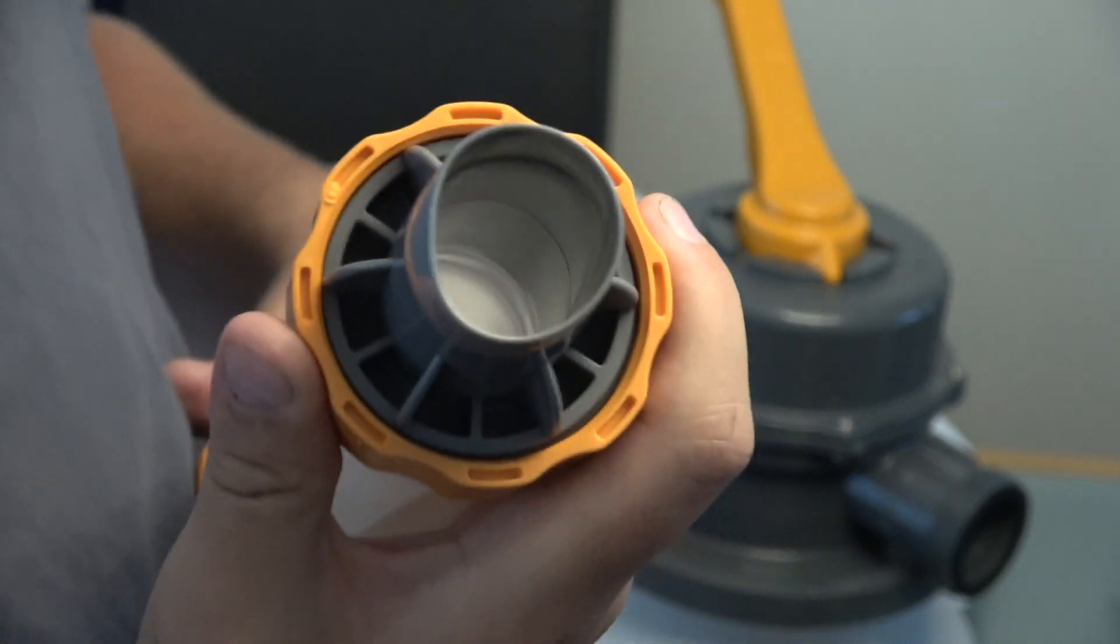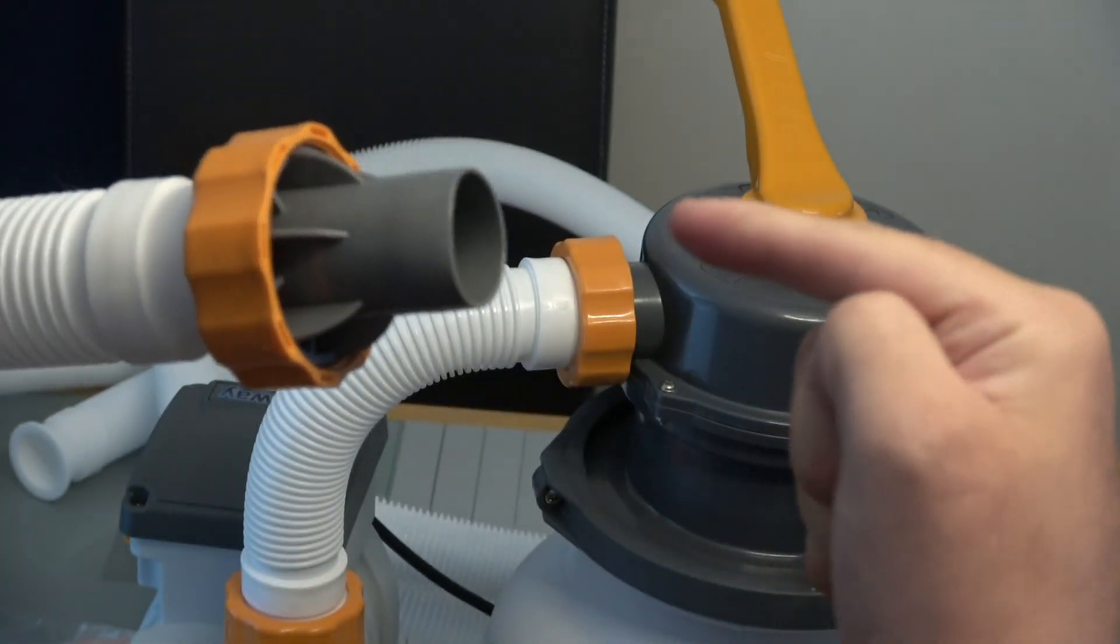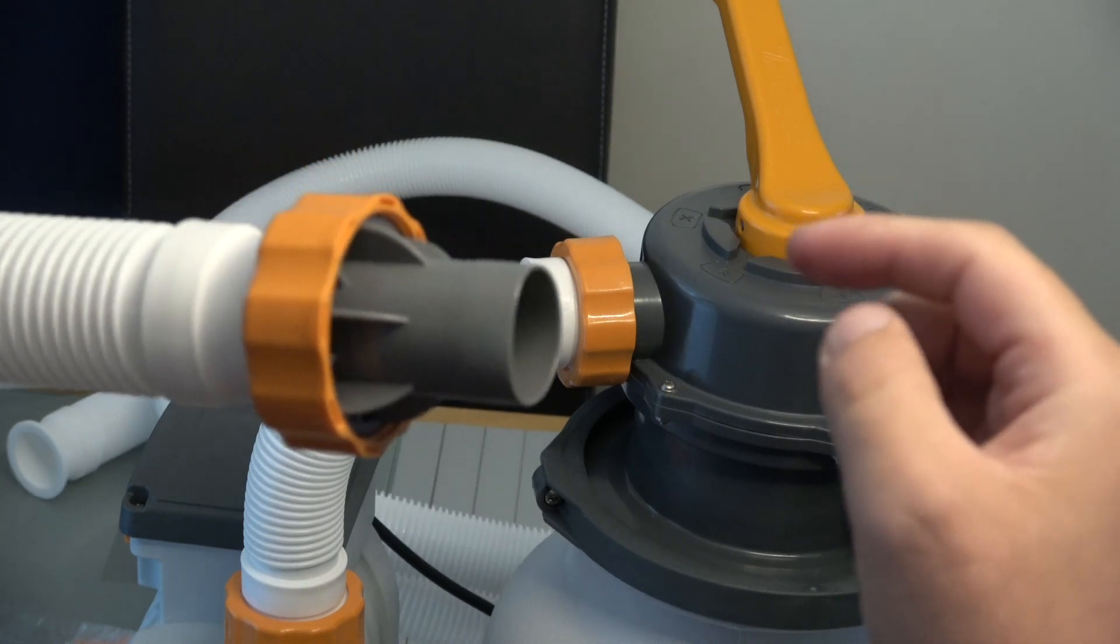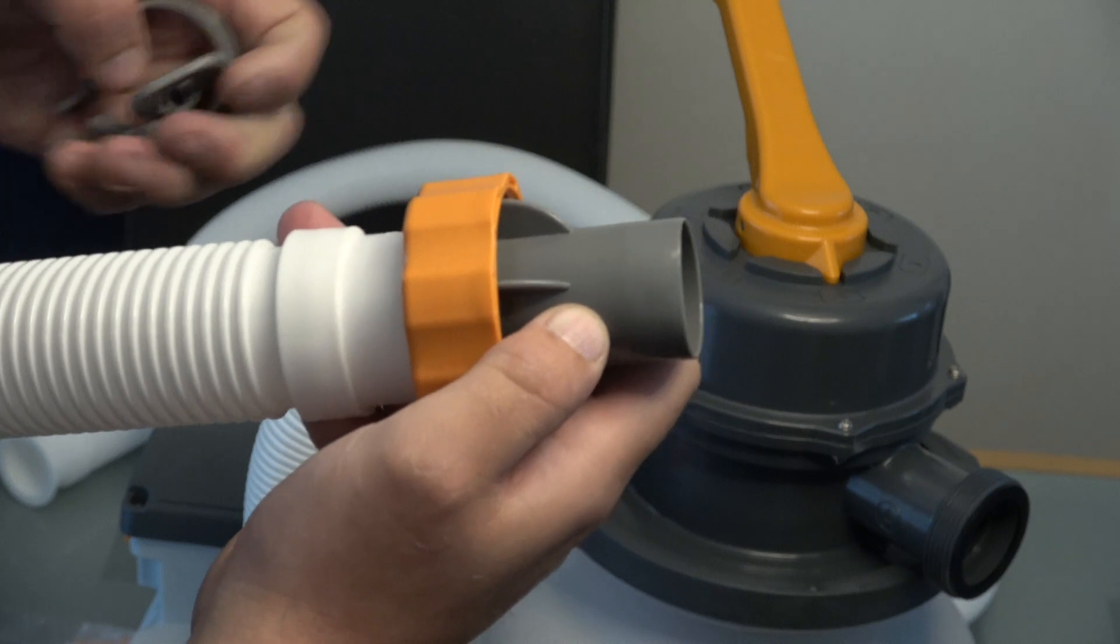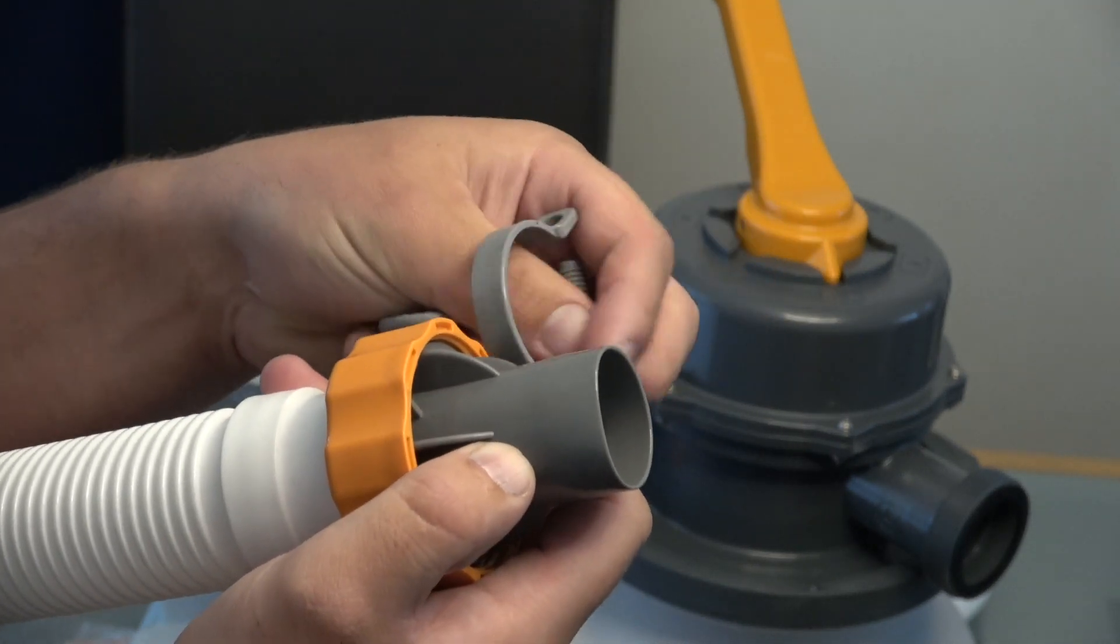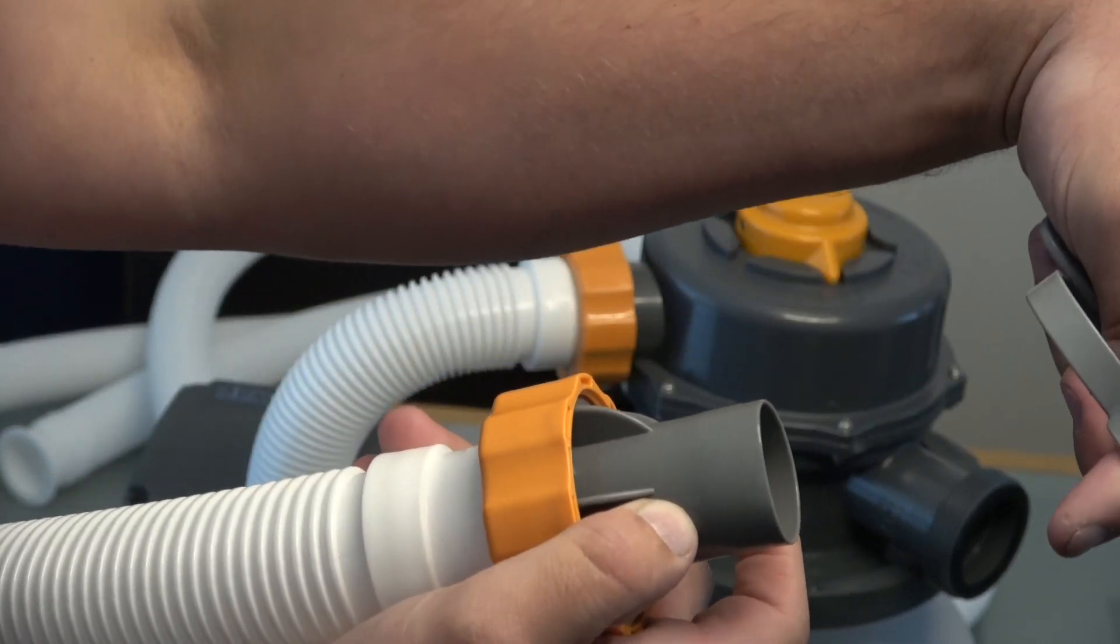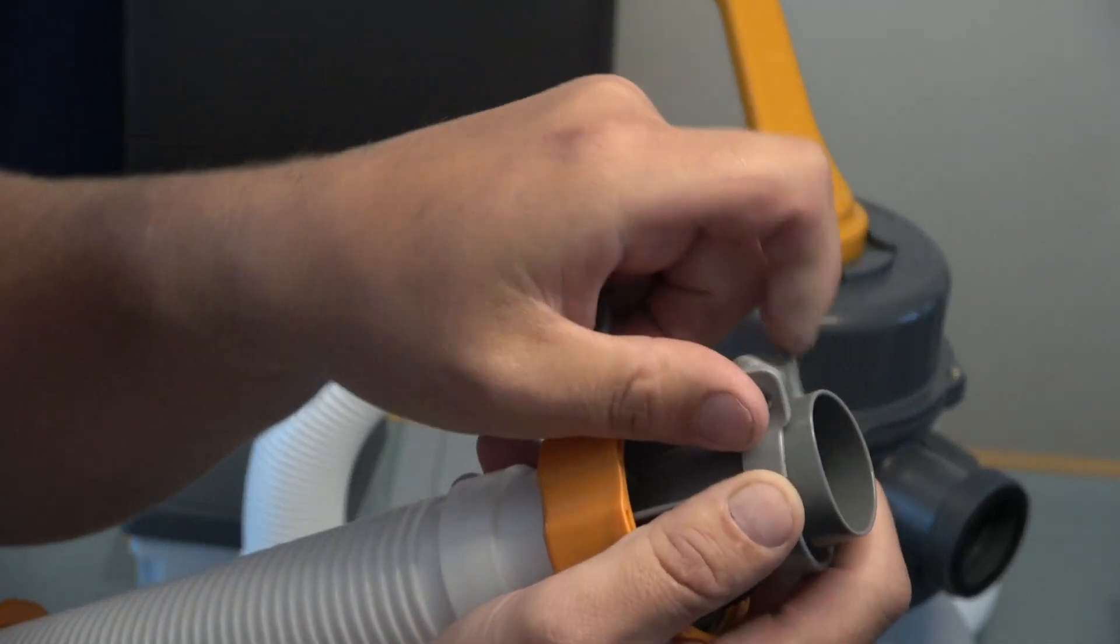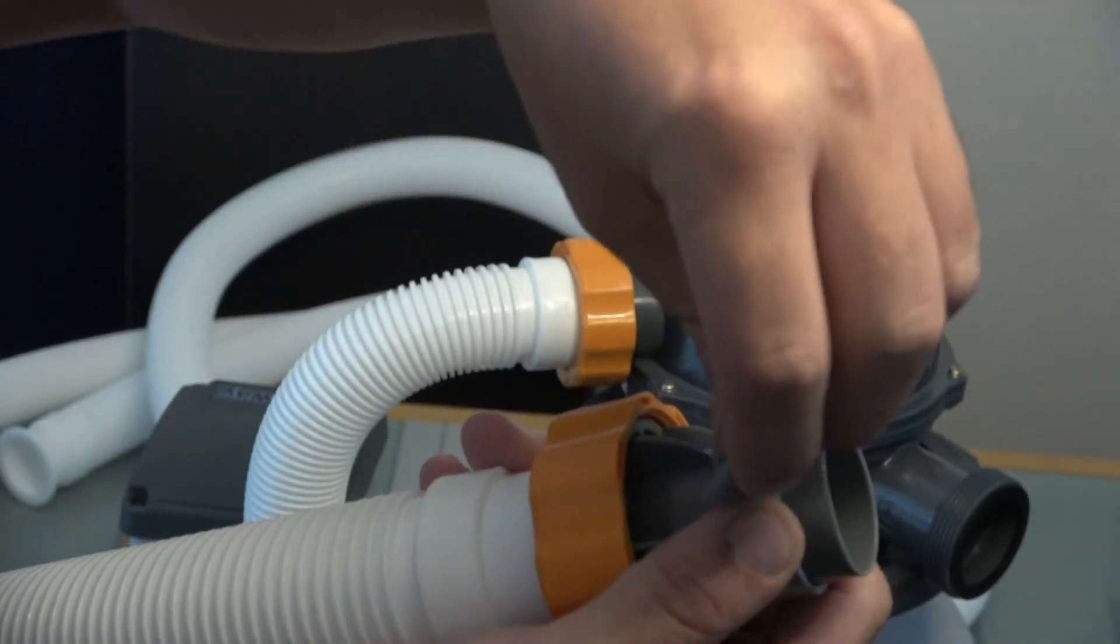And then that'll go. So imagine your pool's here and you've got the long bit just pointing out. And then basically it'll go over the top of there. But before you go over the top, you have... well you can just go over the top. Make sure you plug your pool first if you've got water in it. And then you've got the clips that go over the top like that.